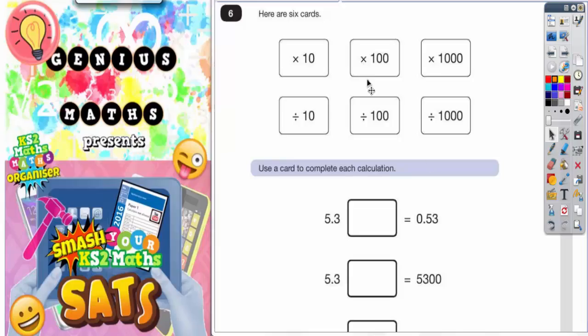Question 6. Here are 6 cards: times 10, times 100, times 1000, divided by 10, divided by 100, divided by 1000. We've got to use a card to complete each calculation.